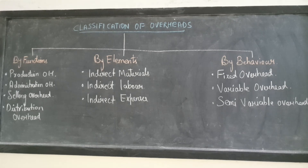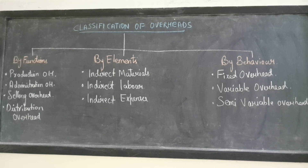When we classify overheads on the basis of functions, we get four types: first one is production overhead, second one is administration overhead, third one is selling overhead, and fourth one is distribution overhead.